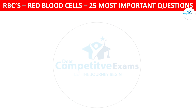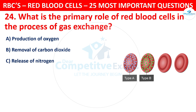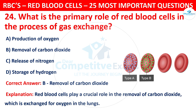Question 24. What is the primary role of red blood cells in the process of gas exchange? The options are: production of oxygen, removal of carbon dioxide, release of nitrogen, or storage of hydrogen. The correct answer is B, that is removal of carbon dioxide. Red blood cells play a crucial role in the removal of carbon dioxide, which is exchanged for oxygen in the lungs.